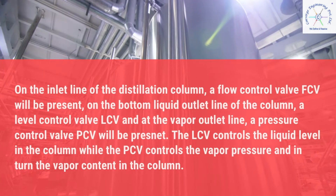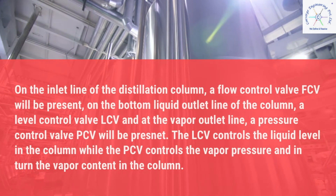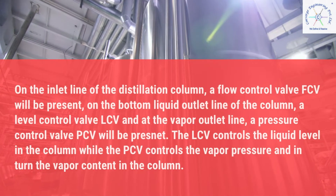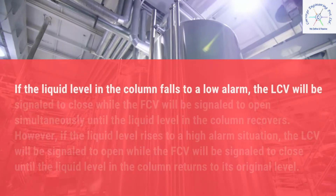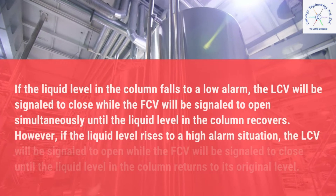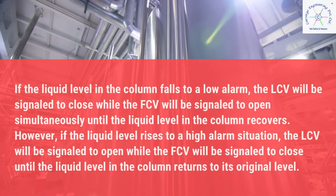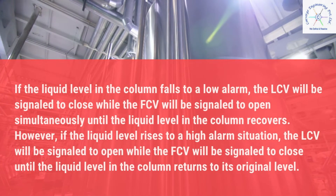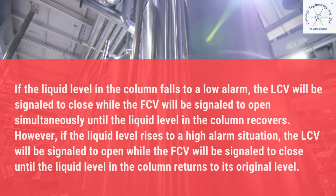The LCV controls the liquid level in the column while the PCV controls the vapor pressure and in turn the vapor content in the column. If the liquid level in the column falls to a low alarm, the LCV will be signaled to close while the FCV will be signaled to open simultaneously until the liquid level in the column recovers.